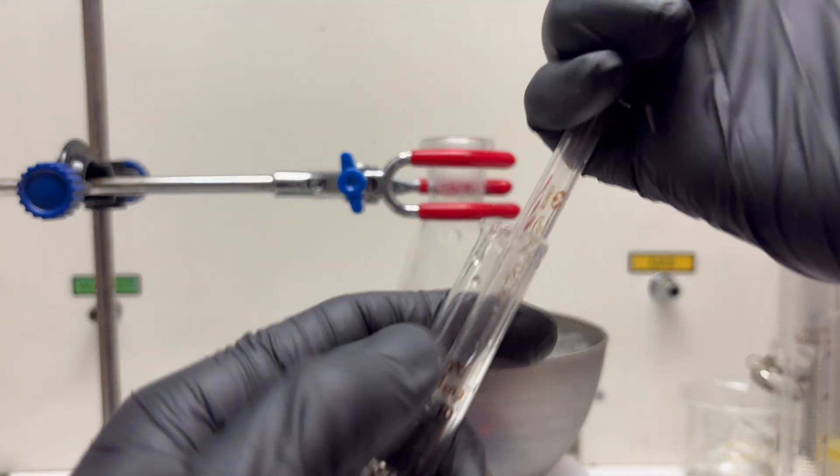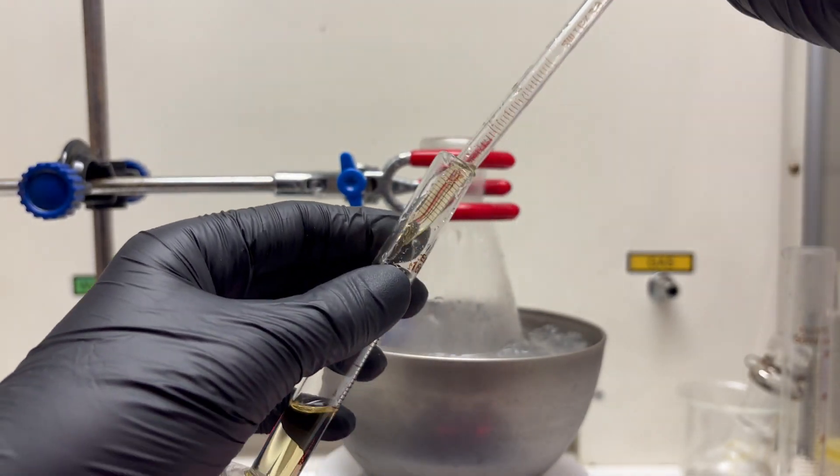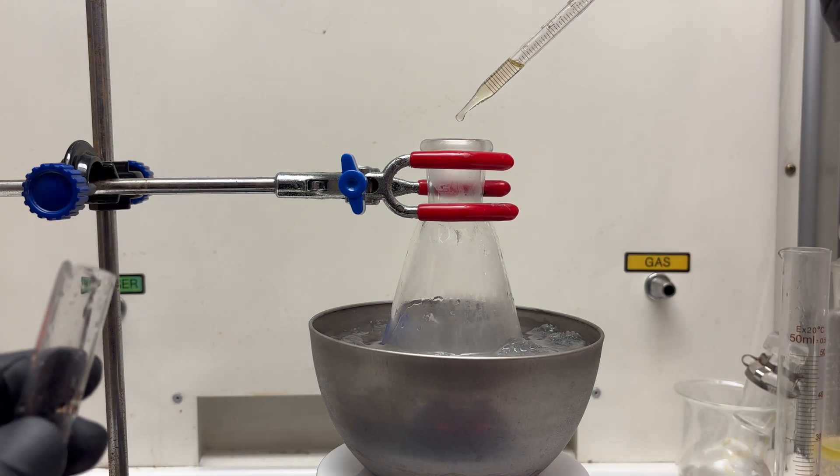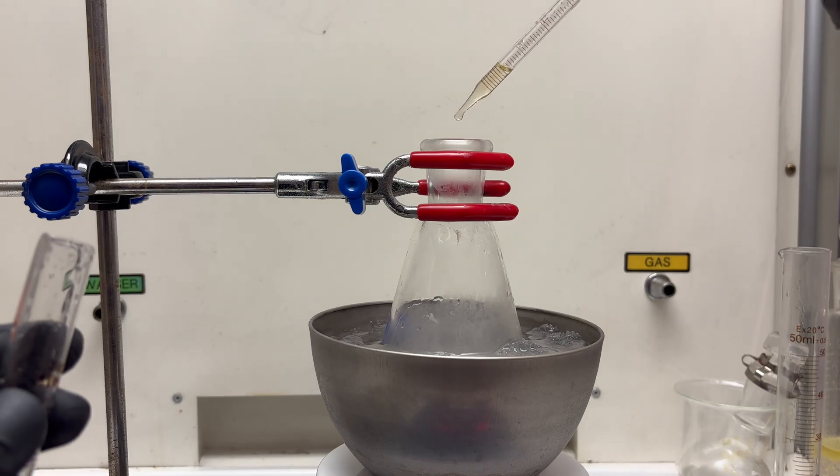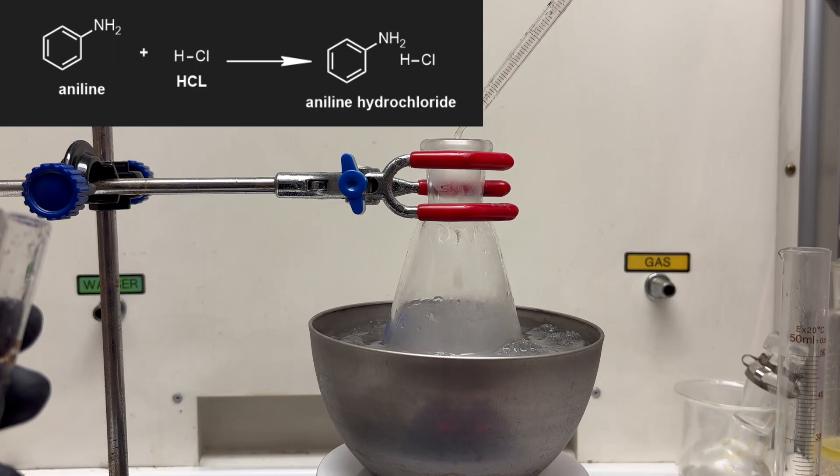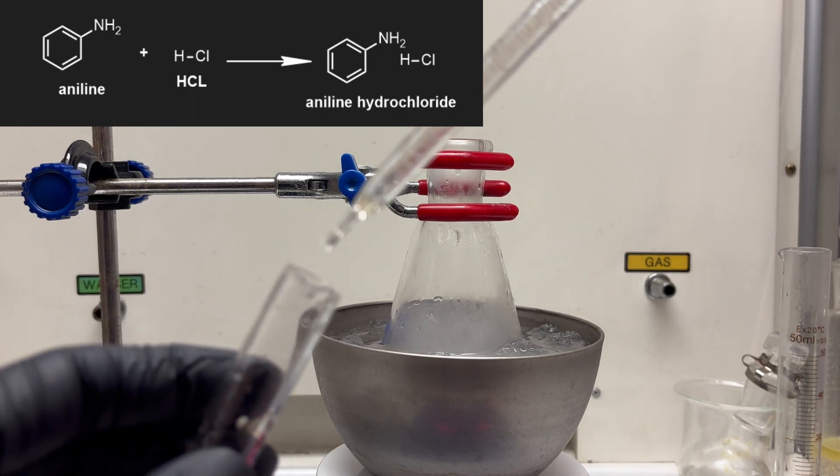Then 4.3 milliliters of aniline are added to the flask. It's important to add aniline slowly because it's producing a lot of heat. When the aniline is added, it reacts with the hydrochloric acid to form aniline hydrochloride.